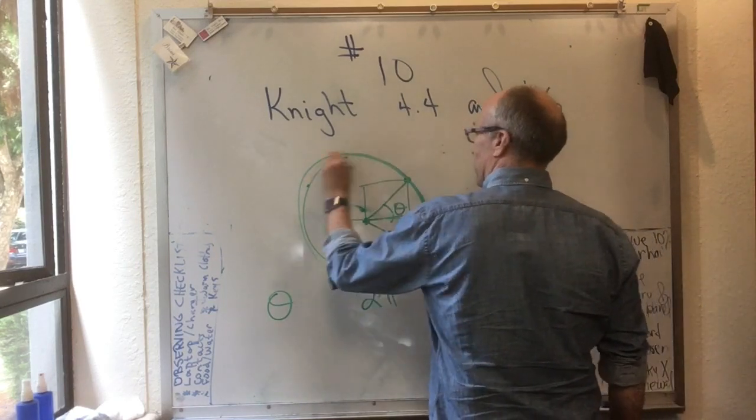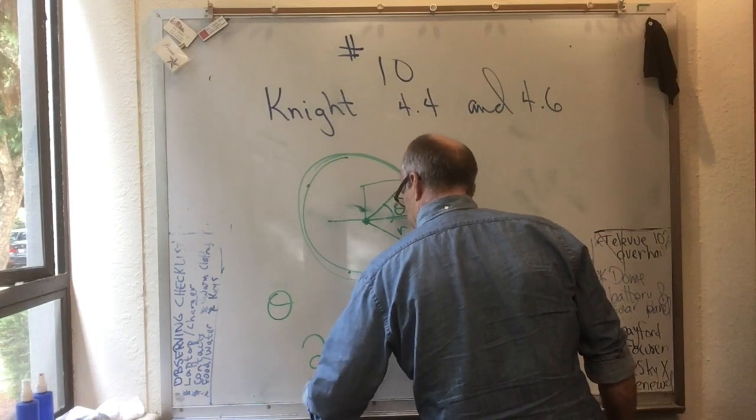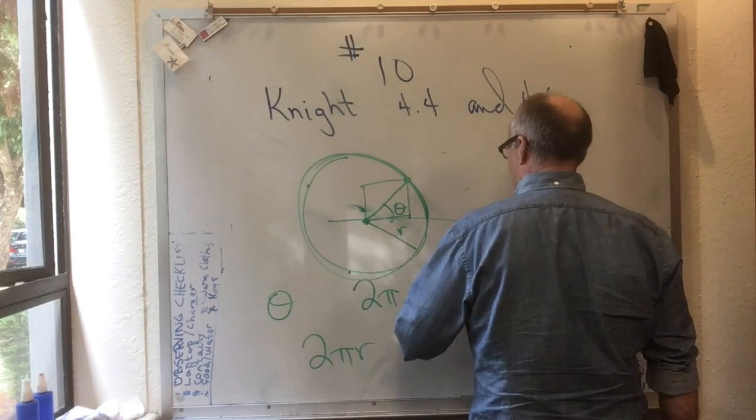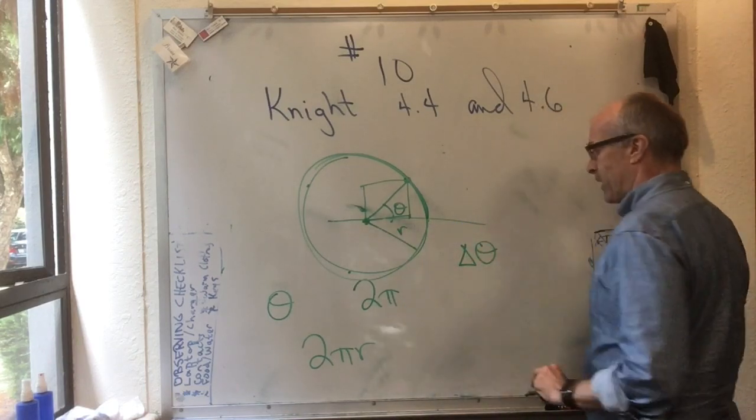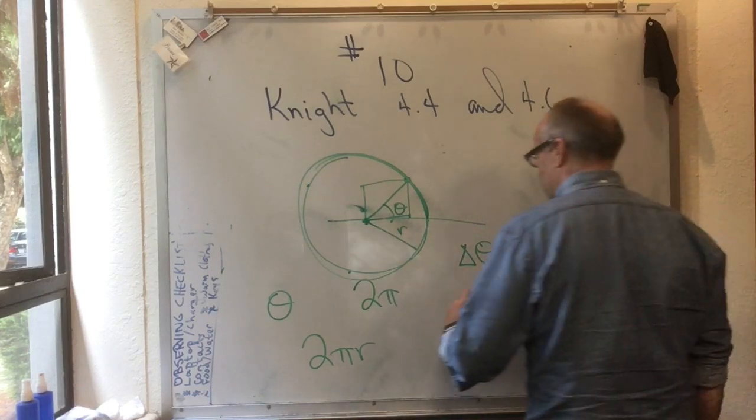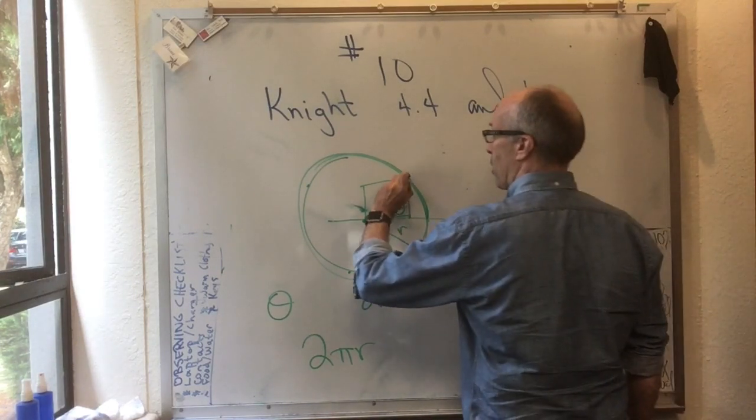And the circumference of a circle is 2πr. So if we measure angles in radians, and the angle changes by an amount delta theta, then the actual distance that the particle travels is r delta theta. That's how far it goes along the rim.